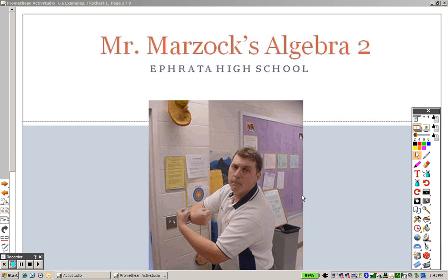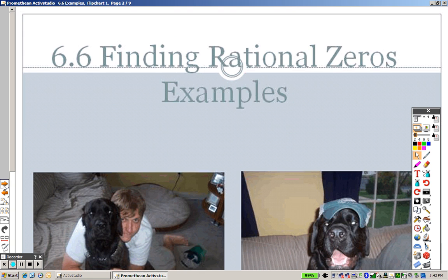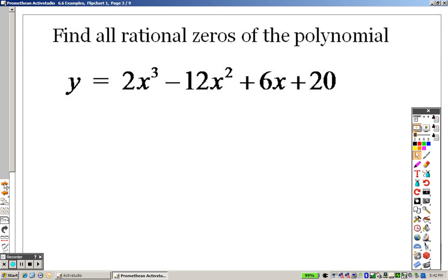All righty, 6.6 is what we are on right now, and that is finding rational zeros, which you guys are just going to love to death here. So let's take a look here at finding some rational zeros, shall we?